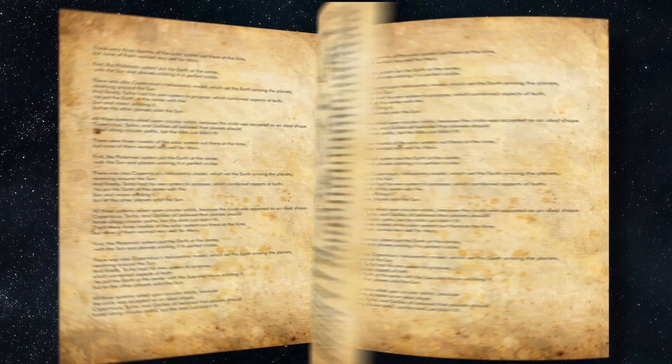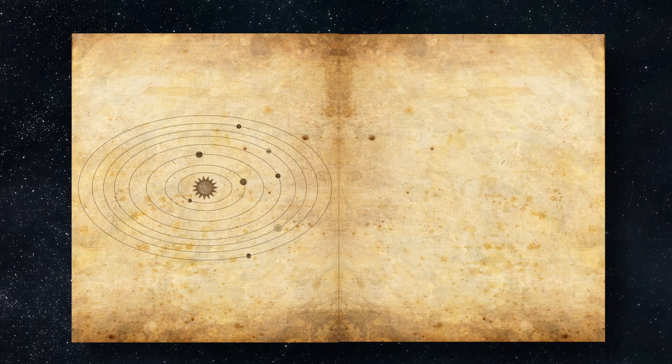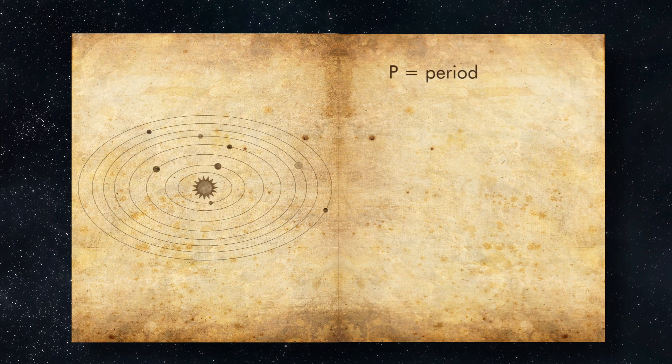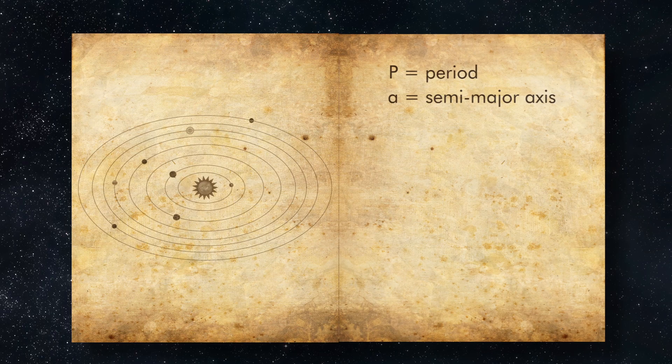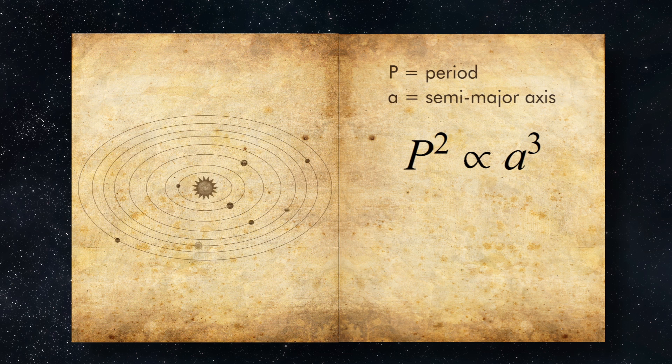The time it takes for a planet to orbit the Sun once, its orbital period p, is related to its average distance from the Sun, its semi-major axis a, in a very specific way. The square of the period is proportional to the semi-major axis cubed.